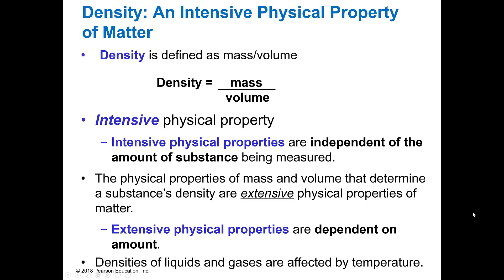Density is what we call a derived unit. That means it's made of two other units. In this case it's two, and so density is defined as mass divided by volume.